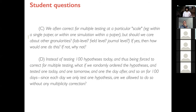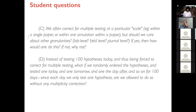The third question: we often correct for multiple testing within one paper or one simulation, but should we care about other granularities — the lab level, the field level, or the journal level? If we should care, how should we do this? And if corrections should only be within a single paper, why or why not?